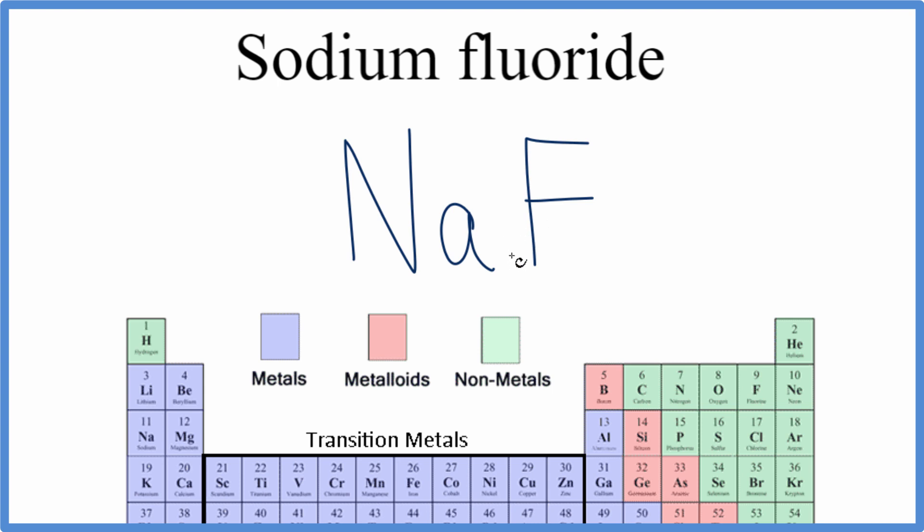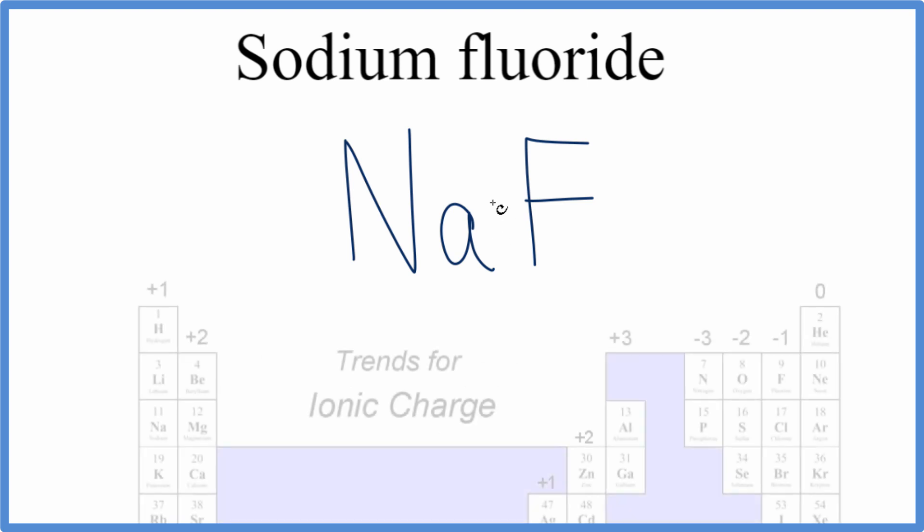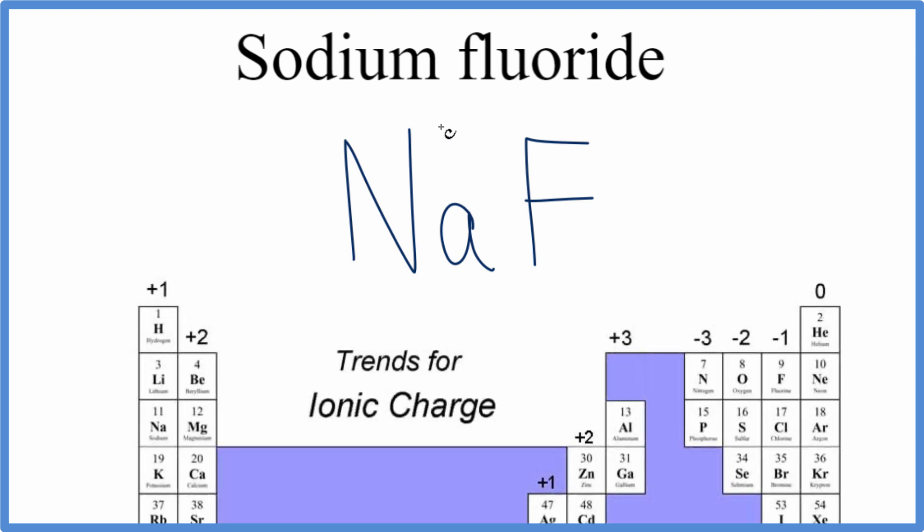When we have an ionic compound, we need to write the charges for each of the elements and balance them to get the net charge to be zero. So sodium has a plus one charge, fluorine has a minus one charge. We add these charges up, we get zero. Plus one, minus one, that gives us zero.